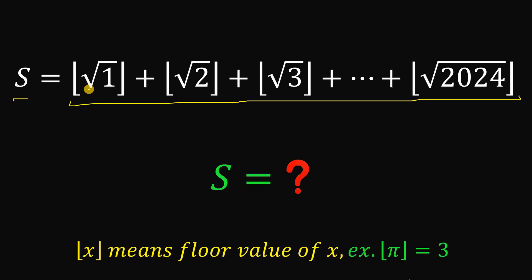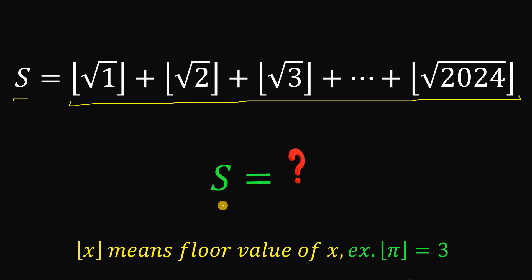So S is equivalent to the floor of square root of 1, plus floor of square root of 2, plus floor of square root of 3, all the way down to the floor of square root of 2024. The question is: what is the value of S? Pause this video right now and see if you can answer this question, because I will show you the solution in 3, 2, 1.